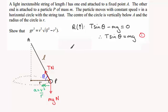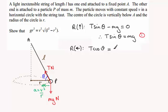The other thing we need to do is resolve towards the centre of the circle. The force keeping the particle in that circle is the horizontal component of the tension, which is T cos θ. That equals mass times acceleration, and the acceleration is V² over R, so T cos θ = mV²/R. That's equation 2.